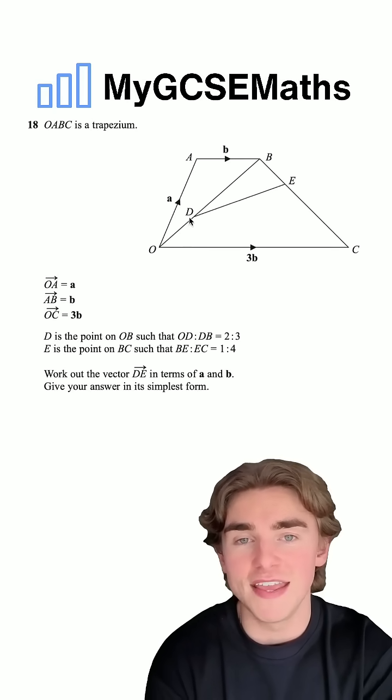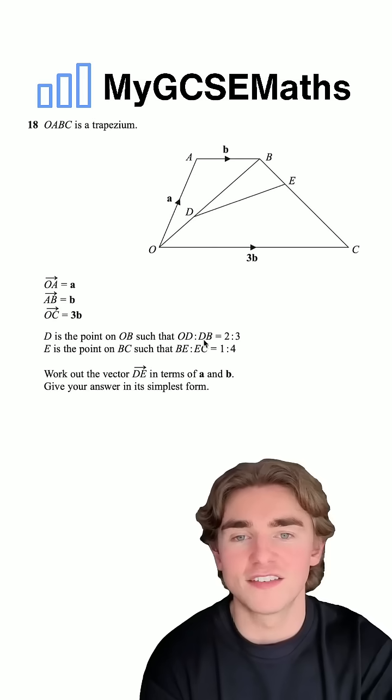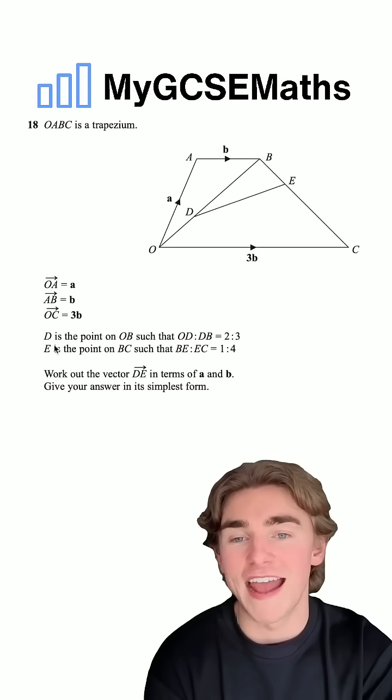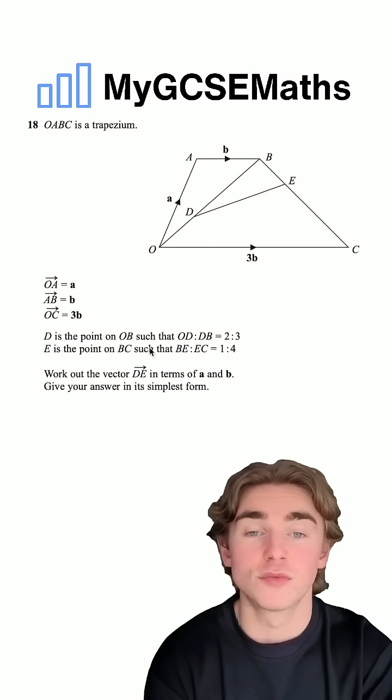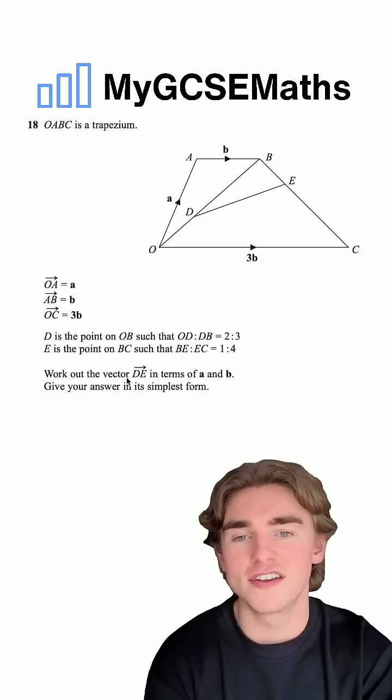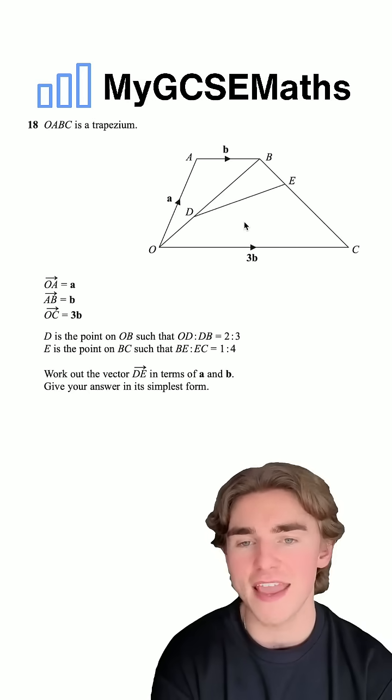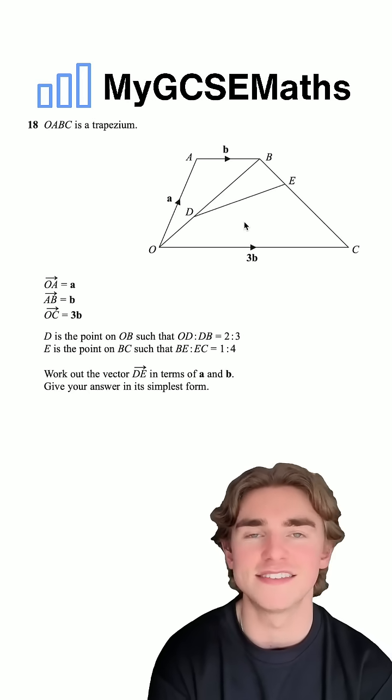We're then told that D is the point on OB such that the ratio of OD to DB is 2 to 3, and E is the point on BC such that the ratio of BE to EC is 1 to 4. We're asked to work out the vector DE in terms of A and B, giving our answer in its simplest form.